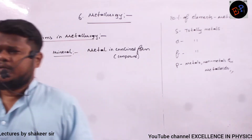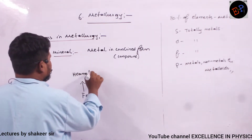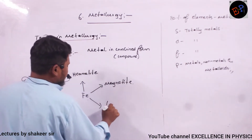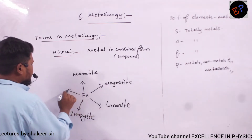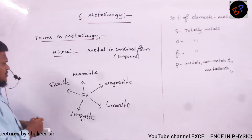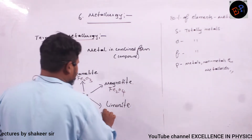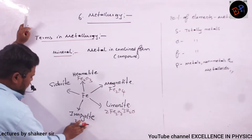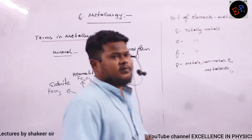Iron has minerals including hematite (Fe₂O₃), magnetite (Fe₃O₄), limonite (2Fe₂O₃·3H₂O), iron pyrite (FeS₂), and siderite (FeCO₃). In all these minerals you can find iron — that is why they are called minerals. When metals are present in combined state, they are called minerals.